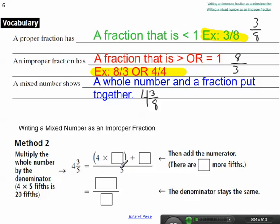So the first thing we're going to work on is writing a mixed number as an improper fraction. So here's my mixed number, 4 and 3 fifths. Here's the formula I'm going to follow every time.